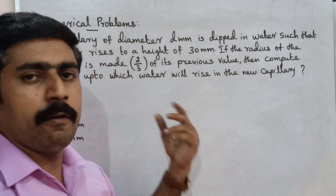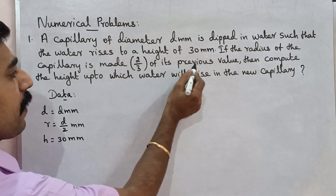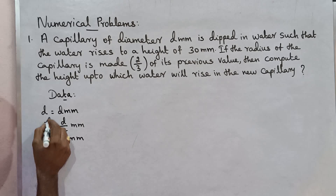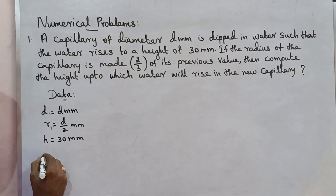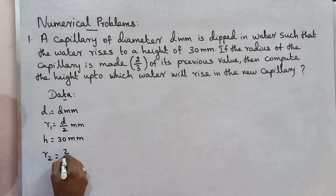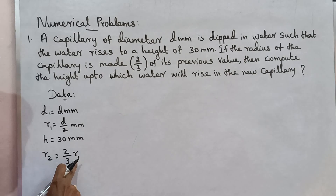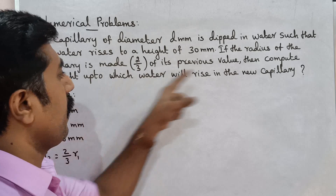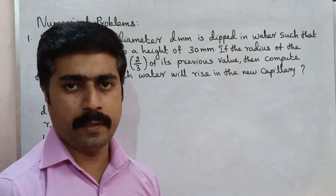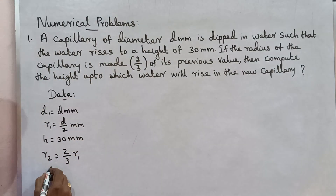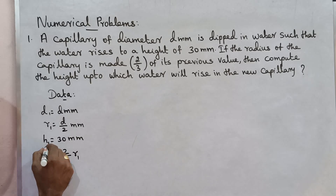I will introduce this capillary. The radius is 2 by 3 of its previous value. The previous value I will say R1. R1 is the previous, I will say R2 — second value — 2 by 3 of its previous, previous is R1. Then compute the height up to which water will rise in the new capillary. That is H1 and H2.